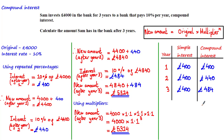Over time this difference gets larger and larger, because compound interest increases exponentially — a term you'll learn at A-level. In other words, it really ramps up over time. So if you had the choice between two banks offering the same interest rate, you'd want the one offering compound interest rather than simple interest.